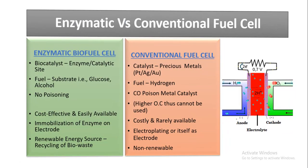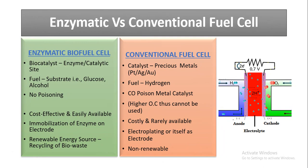Enzymatic versus conventional fuel cell — what is the difference? In an enzymatic biofuel cell the biocatalyst is the enzyme or its catalytic site, whereas in a conventional fuel cell the catalyst is a precious metal like platinum, silver, or gold. In an enzymatic biofuel cell the fuel is the substrate of the enzyme, which may be glucose, alcohol, or hydrogen, while in a conventional fuel cell the fuel is hydrogen.